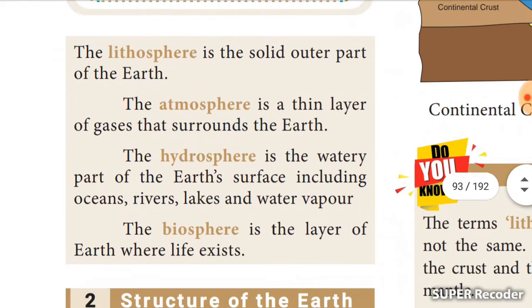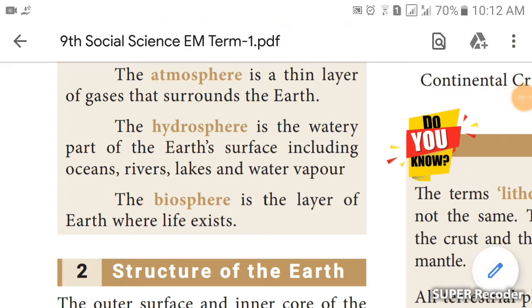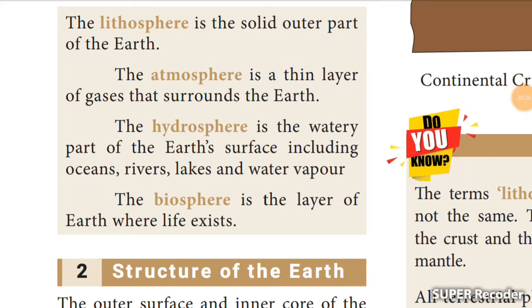The lithosphere is the solid outer part of the earth. The atmosphere is the thin layer of gases surrounding the earth. The hydrosphere is the watery part of the earth's surface, including oceans, rivers, lakes, and water vapor. The biosphere is the layer of the earth where life exists — all human beings, animals, and all life forms on earth.